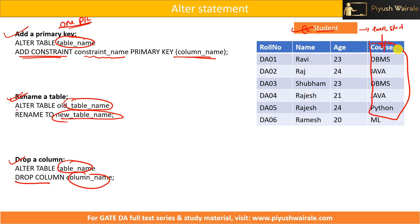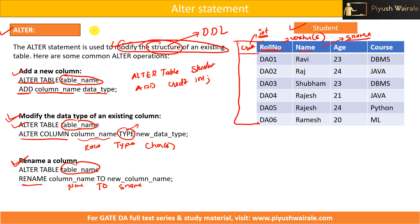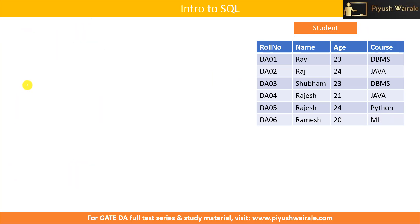Please make sure the column you are dropping doesn't have any dependency on another table, otherwise it will throw an error if there is a constraint on it. Please go through all the commands, note them down, and remember the syntax — you just have to change the table name and column name as needed.